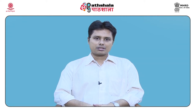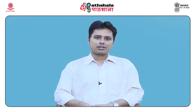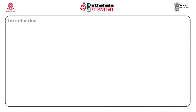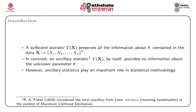We discuss some examples relating to Ancillarity, and finally we shall prove a very important theorem in statistical inference which is known as Basu's theorem. The concept of ancillarity of a statistic is perhaps the furthest away from sufficiency. A sufficient statistic T(x) preserves all the information about theta contained in the data x. In contrast, an ancillary statistic V(x) by itself provides no information about the unknown parameter theta.